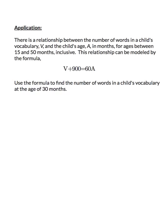Let's look at an application problem. There is a relationship between the number of words in a child's vocabulary V and the child's age A in months. For ages between 15 and 50 months inclusive, this relationship is modeled by the formula V plus 900 equals 60A. We want to use this formula to find the number of words in a child's vocabulary at age 30 months.